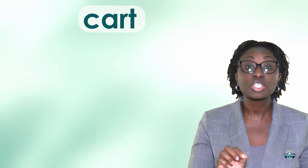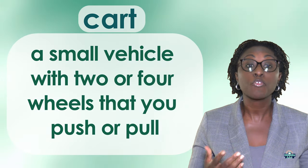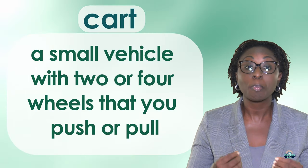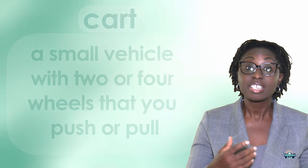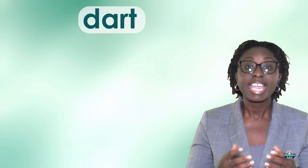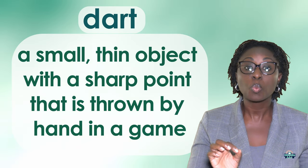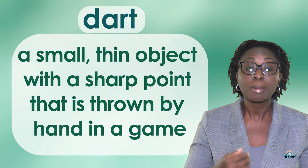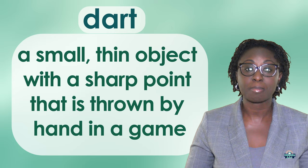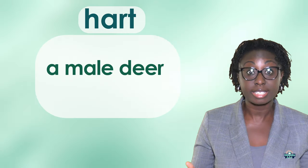CART: a small vehicle with two or four wheels that you push or pull. DART: a small, thin object with a sharp point that is thrown by hand in a game. HART: a male deer.